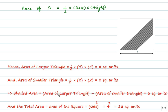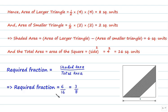Thus shaded area is equal to 8 minus 2 which is 6 square units and as we calculated before total area is equal to the area of the square which is equal to 16 square units. The required fraction is shaded area divided by total area that is 6/16 or 3/8.